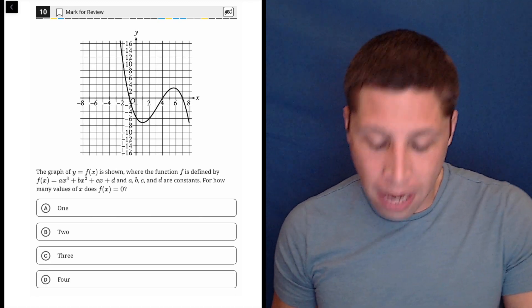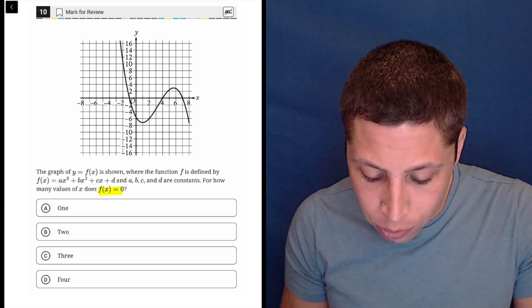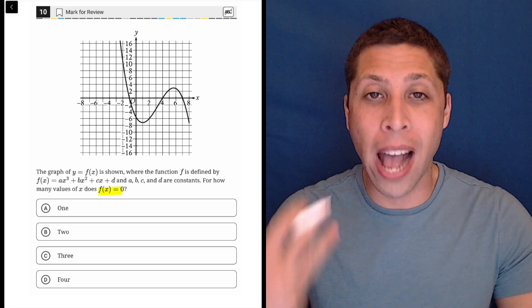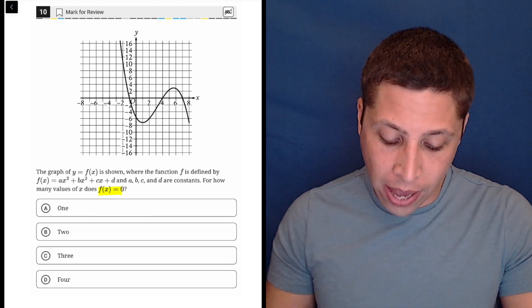It's got this weird equation, but they're basically only testing the concept of function notation. Do you understand what they're asking when they say, for how many values of x does f of x equal 0?